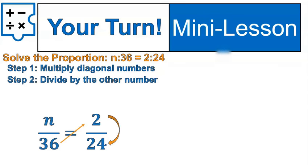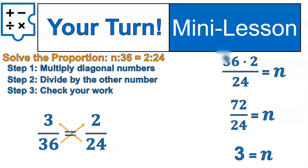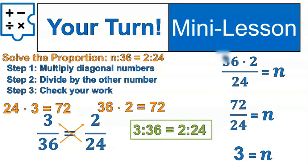Let's multiply the diagonal numbers and divide by the remaining number, 36 times 2. Notice those are our numbers that are diagonal divided by 24. At this point, we should be such pros at solving using cross multiplying that we're just awesome, amazing at it. 36 times 2 is 72 divided by 24 gives us 3. We can substitute that in and double check our work. 24 times 3 is 72. 36 times 2 is 72. And there we have it. Our final answer is N is equal to 3.